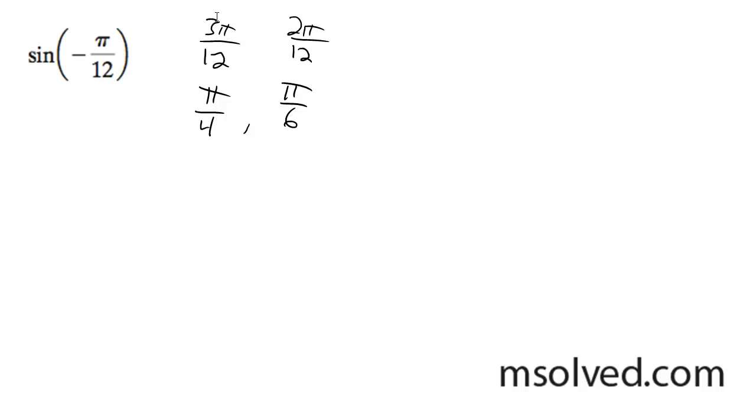So we've got the sine of negative pi over 12. We don't know what pi over 12 is, but we can break down components of 3 pi over 12 and 2 pi over 12, which we know.